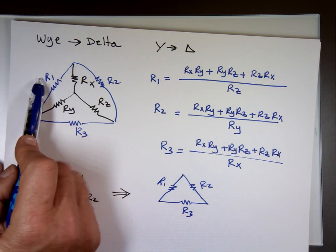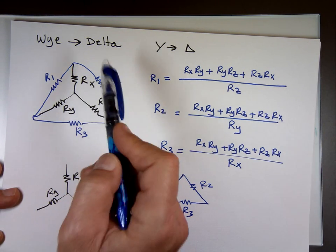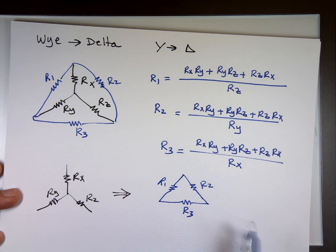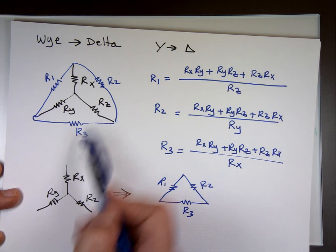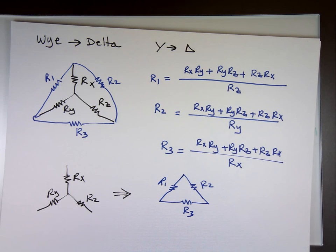The bottom, if I'm looking for R sub 1, is R sub Z. If I'm looking for R sub 2, the bottom is R sub Y. If I'm looking for R sub 3, the bottom is R sub X. The top doesn't change. And that's the last piece in chapter 5.